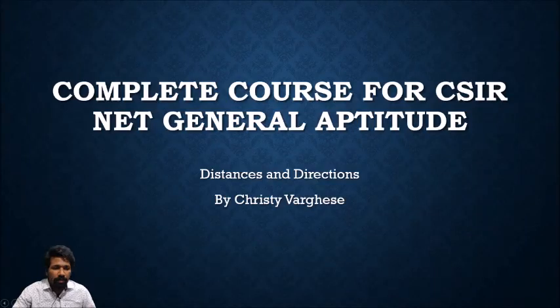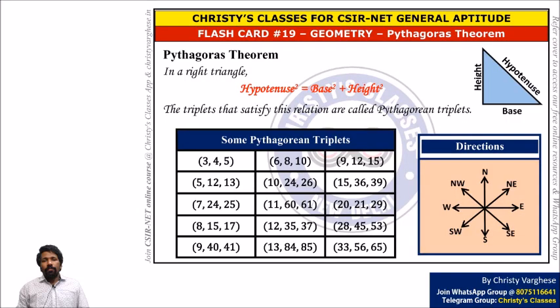We are discussing the topic distance and direction today. This is the extension of geometry itself. For distance and direction, you should first be clear about all 8 directions. North, south, east, west — you should know where each is.